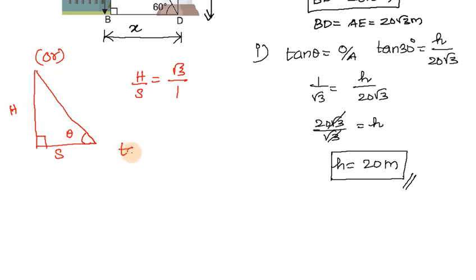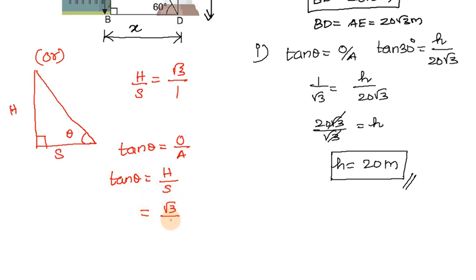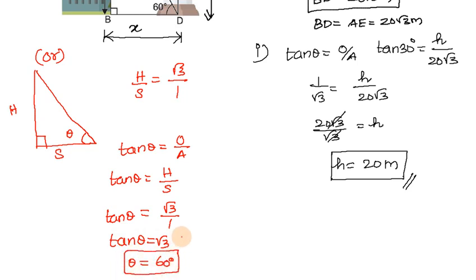Using tan theta equals opposite over adjacent: tan theta equals root 3 divided by 1, so tan theta equals root 3. Since tan 60° equals root 3, theta equals 60 degrees. Therefore the angle of elevation is 60 degrees.